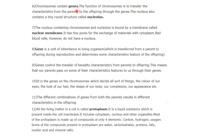Chromosomes contain genes. The function of the chromosome is to transfer characteristics from parents to offspring. The nucleus also contains a tiny round structure called the nucleolus. The nucleus containing chromosomes is bound by a membrane called the nuclear membrane. In these chromosomes, the gene is present and it is considered the unit of inheritance in living organisms, which is transferred from parents to offspring.